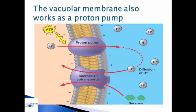The vacuole membrane also works as a proton pump. Part of the vacuole membrane works as a proton pump and uses energy from adenosine triphosphate, or ATP, to pump hydrogen ions into the contents of the vacuole. This maintains acidic conditions inside it.